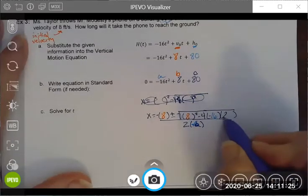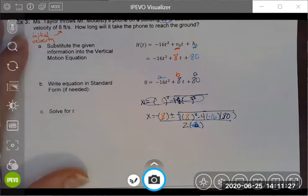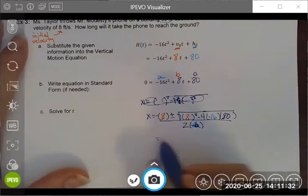All right, so if I simplify all these lovely little things, then I end up with negative 8 plus or minus the square root...